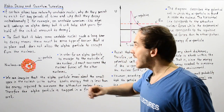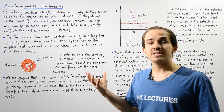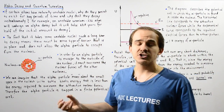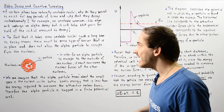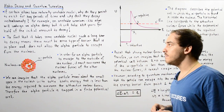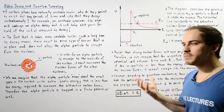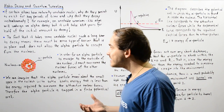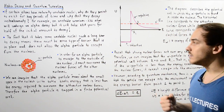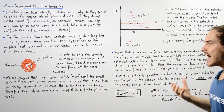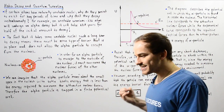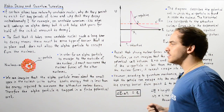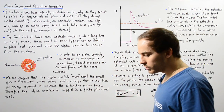The fact that it takes unstable nuclei such a long time to actually decay means there must be some type of energy barrier that is present, which does not allow the alpha particle to escape from the nucleus and into the surrounding environment.